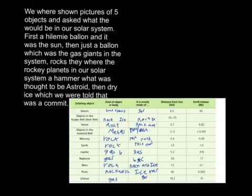First a helium balloon and it was the sun. Then just a balloon which was the gas giants in the system. Rocks, they were the rocky planets in our solar system. A hammer that was thought to be an asteroid. Then dry ice which we were told that was a comet.